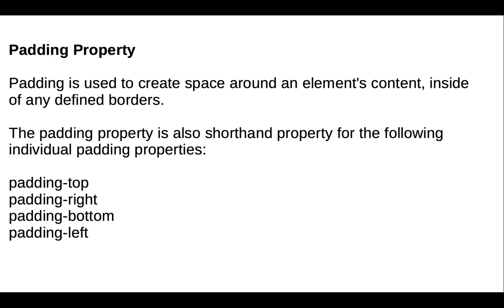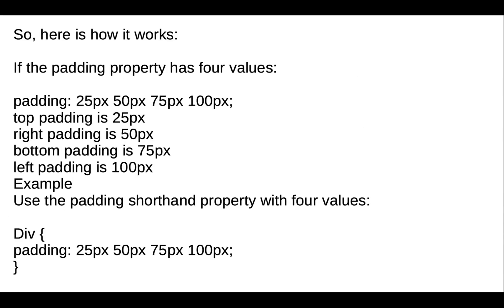Next is the padding property. Padding is used to create space around an element's content, inside of any defined border. The padding property is also a shorthand property covering padding-top, padding-right, padding-bottom, and padding-left. If the padding property has four values, we can write them in one line. For example: 25px is top padding, 50px is right padding, 75px is bottom padding, and 100px is left padding, written in one line for the div selector.